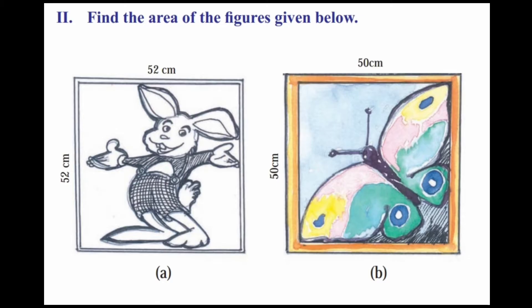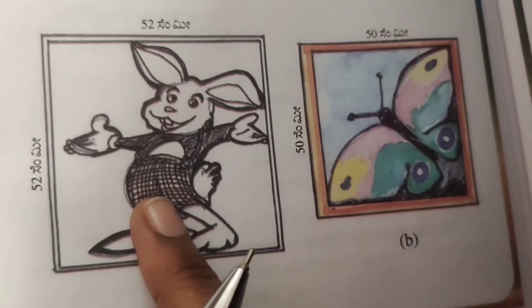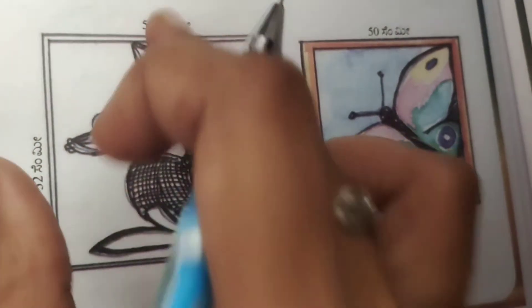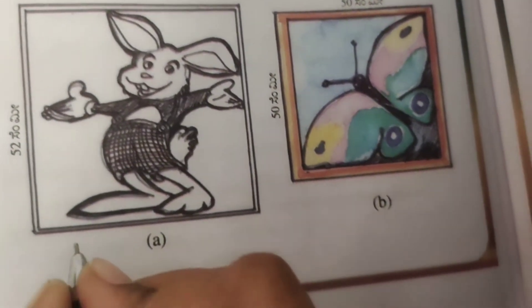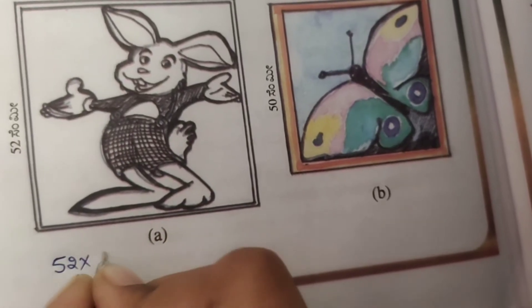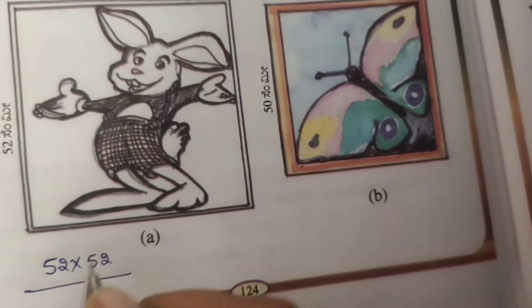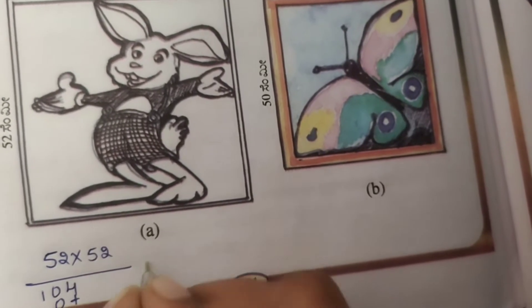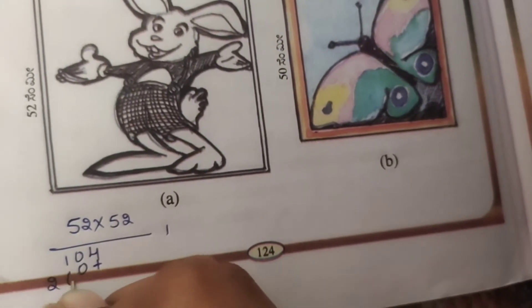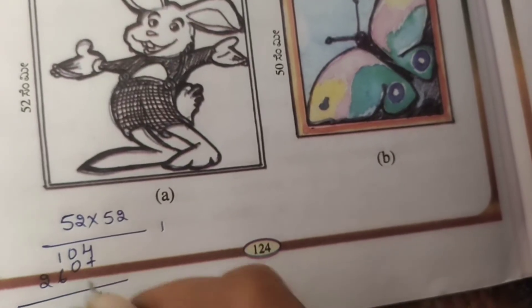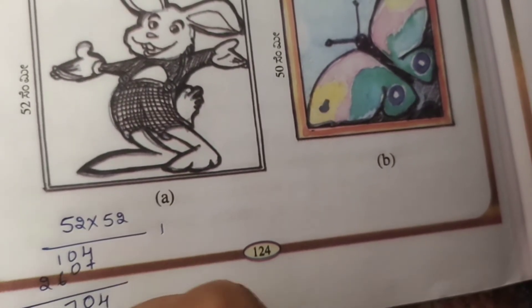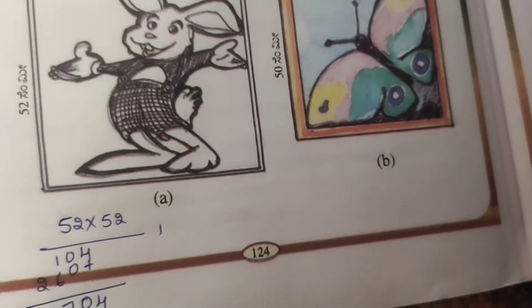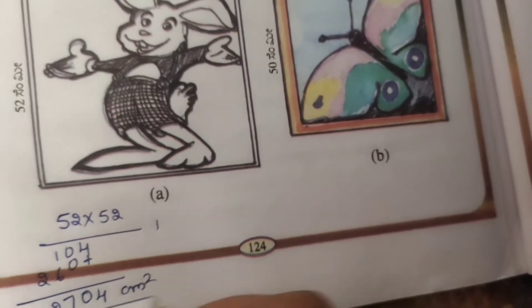Second: find the area of the figures given below. First figure has length 52 centimeters. So 52 into 52: 2 twos are 4, 2 fives are 10, plus 5 twos are 10, so 0 carry 1, 5 fives are 25, 25 plus 1 is 26. Result: 2704 centimeter square.